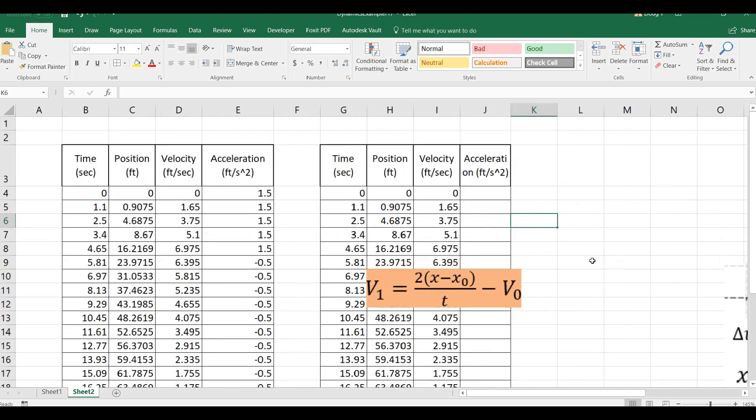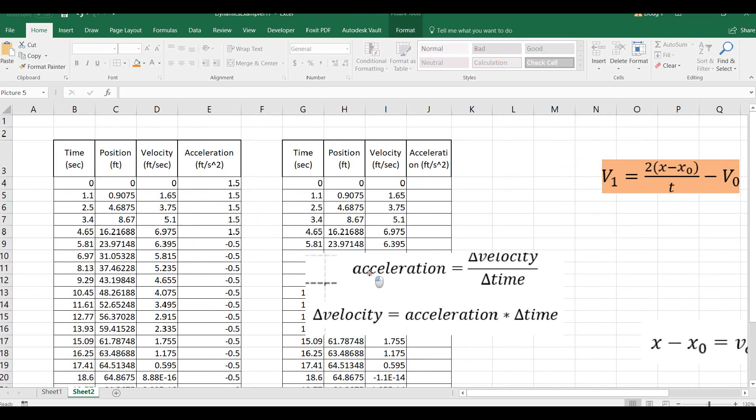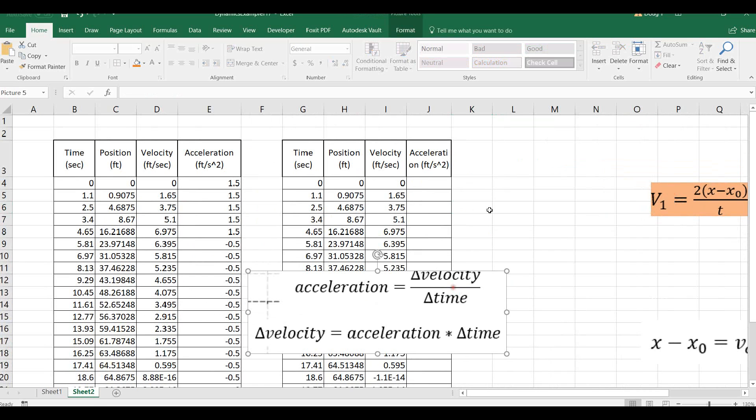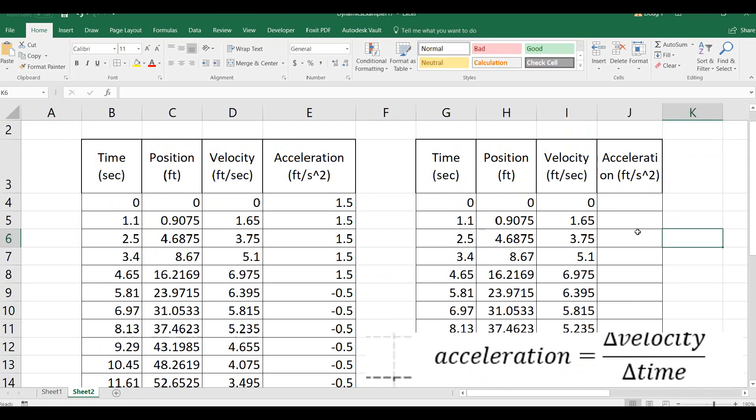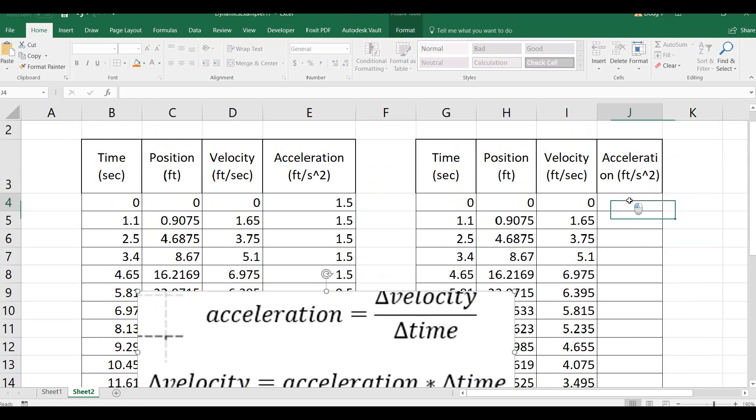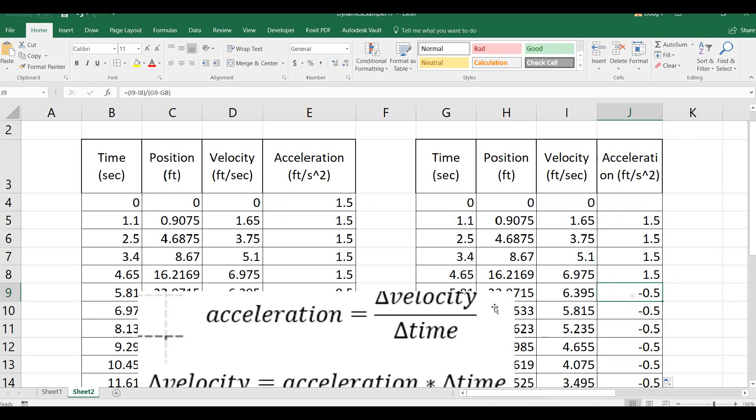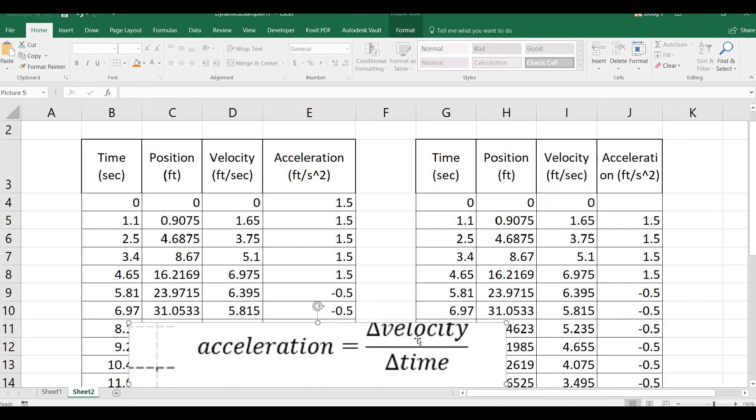Last column, acceleration. Let's go ahead and grab that acceleration equation again. Acceleration is just change in velocity over change in time. Now, this is a change, so we can't start it with the first cell here. We're going to go to the second cell and say equals v2 minus v1 divided by t2 minus t1. That's change in velocity divided by change in time. And sure enough, there is our 1.5 acceleration again. As we get into this new velocity region, the acceleration is going to go negative.